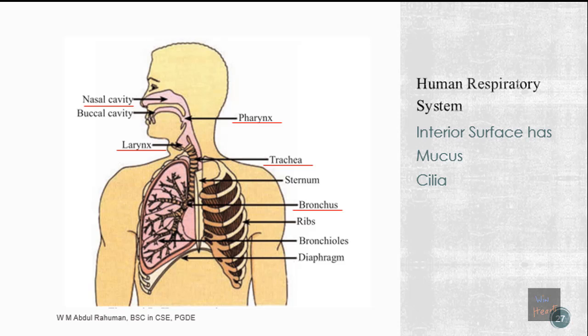We also have the bronchus, which is like a branch from the trachea. There are two parts — one for the right lung and one for the left lung. We also have bronchioles, which are the smaller sub-parts of the bronchus.